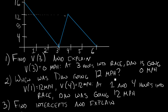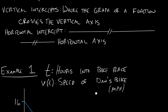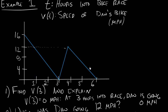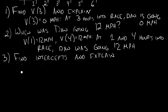The last thing we want to be able to do is find intercepts. A vertical intercept is where the graph of a function crosses the vertical axis. Looking at the graph, it crosses the vertical axis at an input of 0, and the output is 16. So V of 0 equals 16. The story is: 0 hours into the race — when the race just started — I was going 16 miles per hour. So I was doing pretty good at that point.